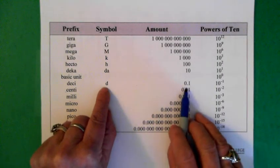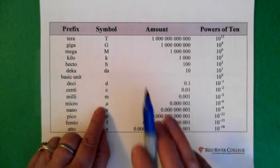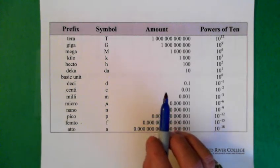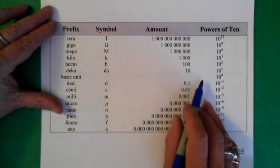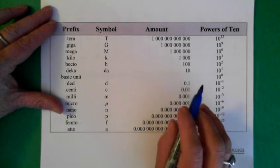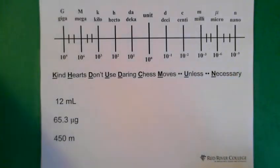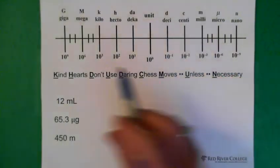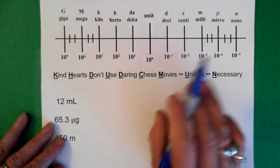Here we see deci stands for 0.1, or 1 over 10. Each of these symbols here stand for a number, and because of that we're able to move the decimal, because these numbers change by 10. They either divide by 10 or divide by 1,000, or are multiplied by 10 or 1,000. One way of writing this structure is to put it on a scale, and based on that we can just move the decimal.